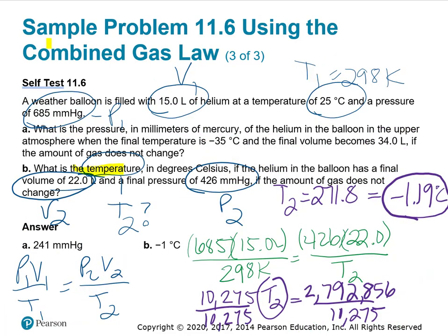Part B wants to know what is the temperature, so we're looking for T2 in degrees Celsius. If the helium balloon has a final volume, our V2 of 22 liters, and a final pressure, a P2 of 426 millimeters of mercury, we'll use the same equation, the combined gas law, P1V1 over T1 equals P2V2 over T2. I put in my initial pressure we were given above, my initial volume, my initial temperature, my second pressure, my second volume, and we need to find T2.